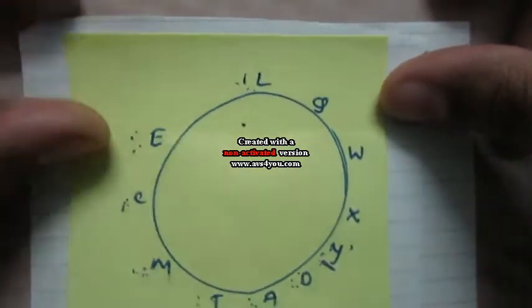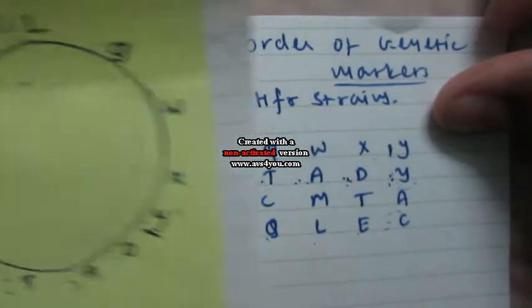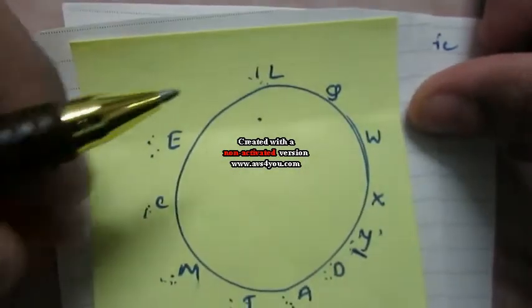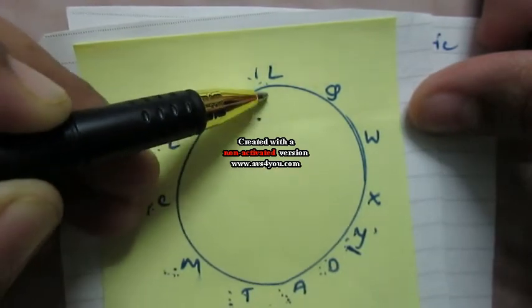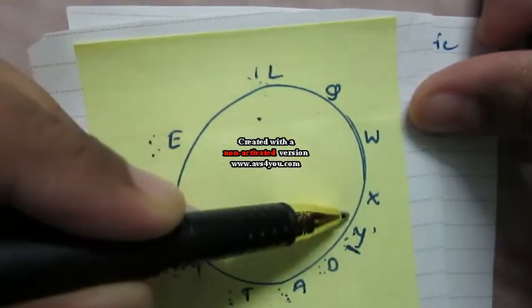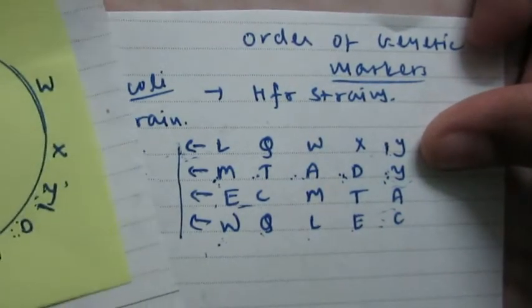In the first strain, sequences are L Q W X NY. I start from the clockwise direction. So first is L, Q, W, X, NY. In the second strain, Y is the common sequence, right?